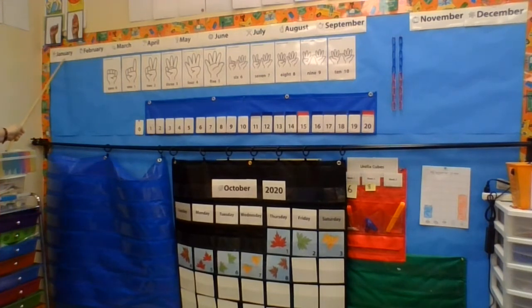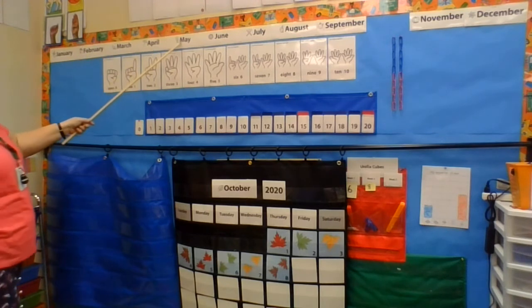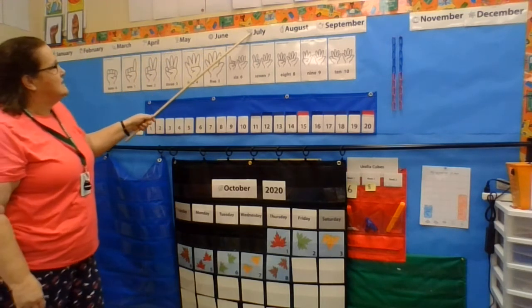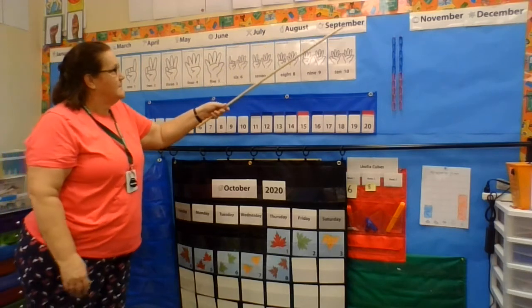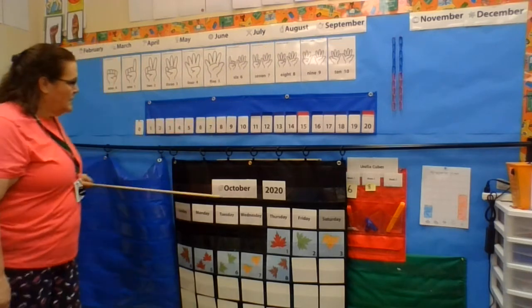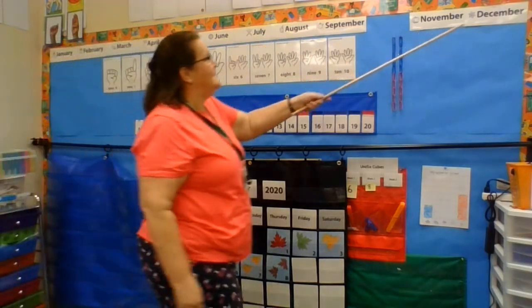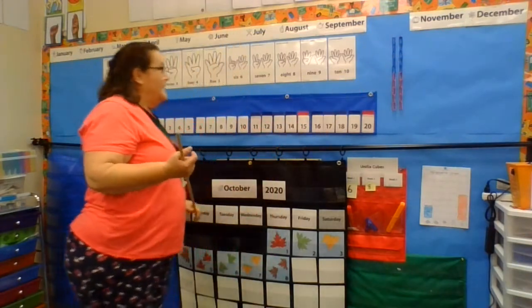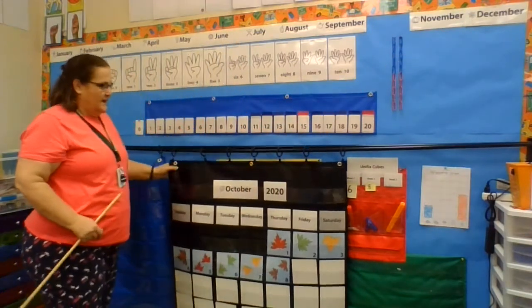January, February, March, April, May, June, July, August, September. It's October, November, December. Those are the months of the year.